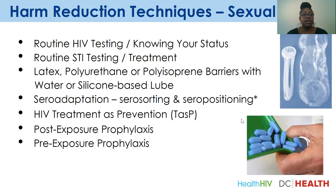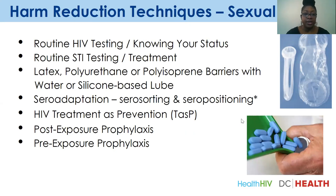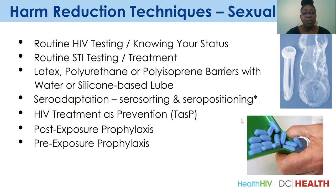Harm reduction techniques for sexual health include everything you probably thought of and more: routine HIV testing, know-your-status campaigns, STI testing, the usage of barriers — latex, polyurethane, or polyisoprene — seroadaptation, treatment as prevention, post-exposure prophylactics (PEP), and PrEP, pre-exposure prophylactics. These are some newer interventions that are amazing, work well, and should be more widespread.